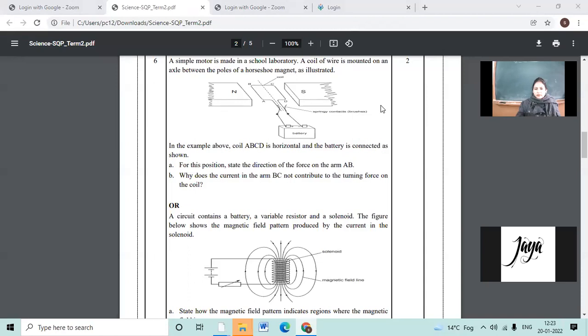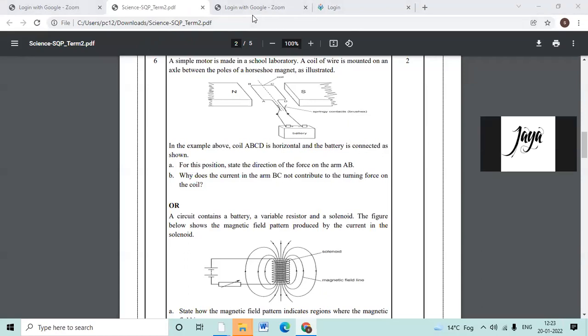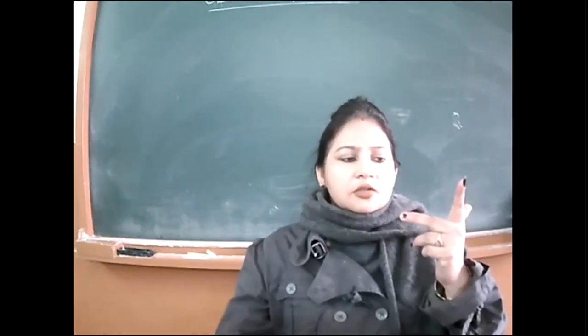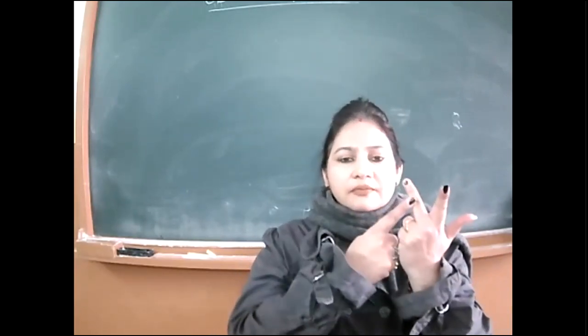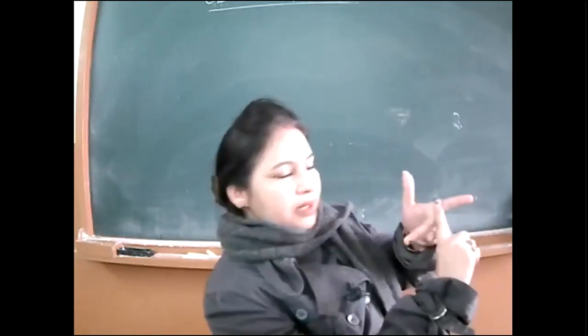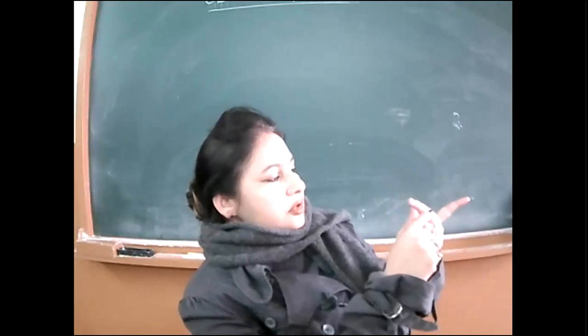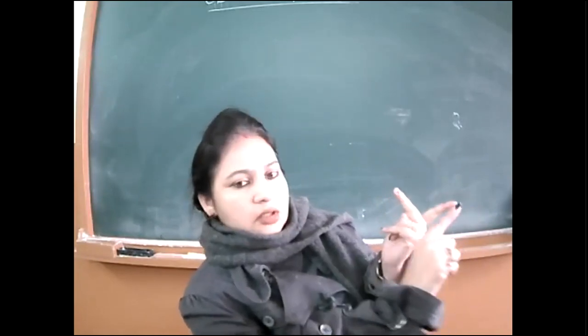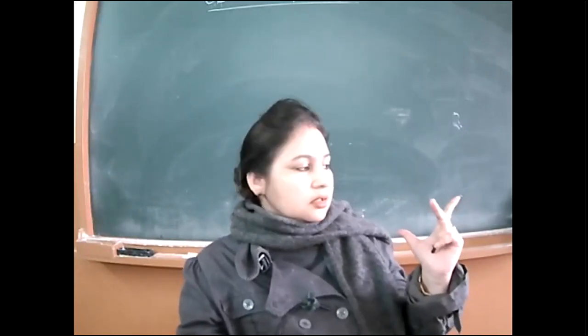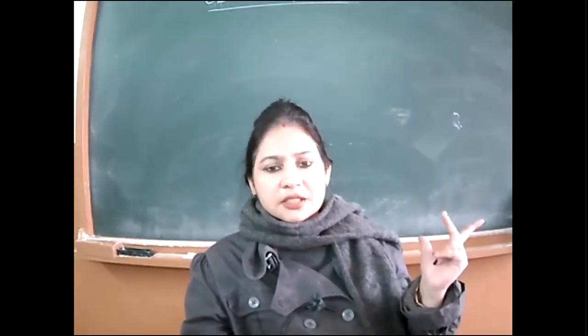And what is the direction of force on arm AB using this rule? Fleming's left hand rule? Upward direction. It is? Upward, upward. Upward, no? It is downwards. Okay, see how? See how it is downwards. Inwards means downwards. Okay, so always you have to apply the rule in this way.